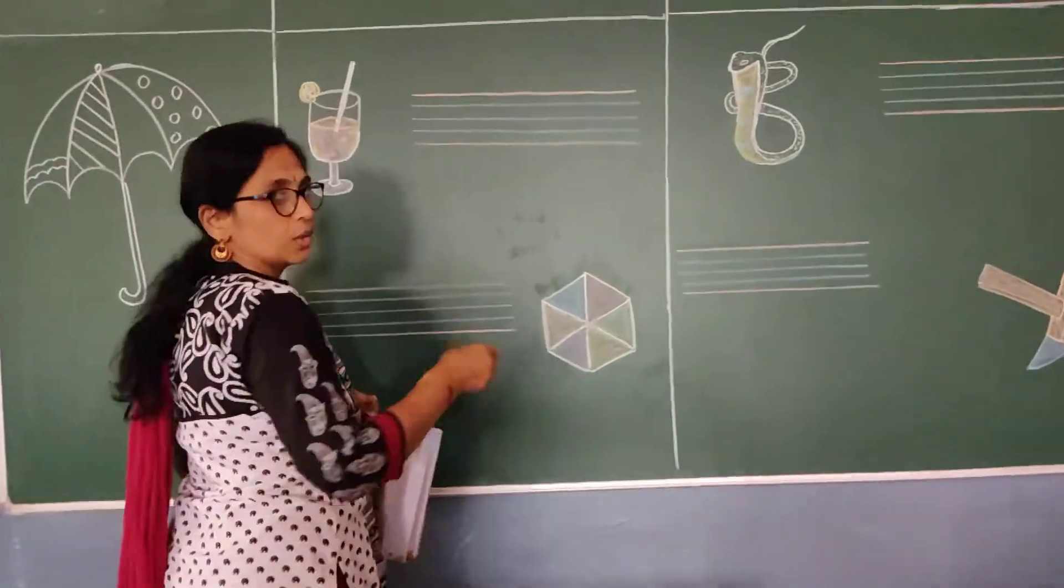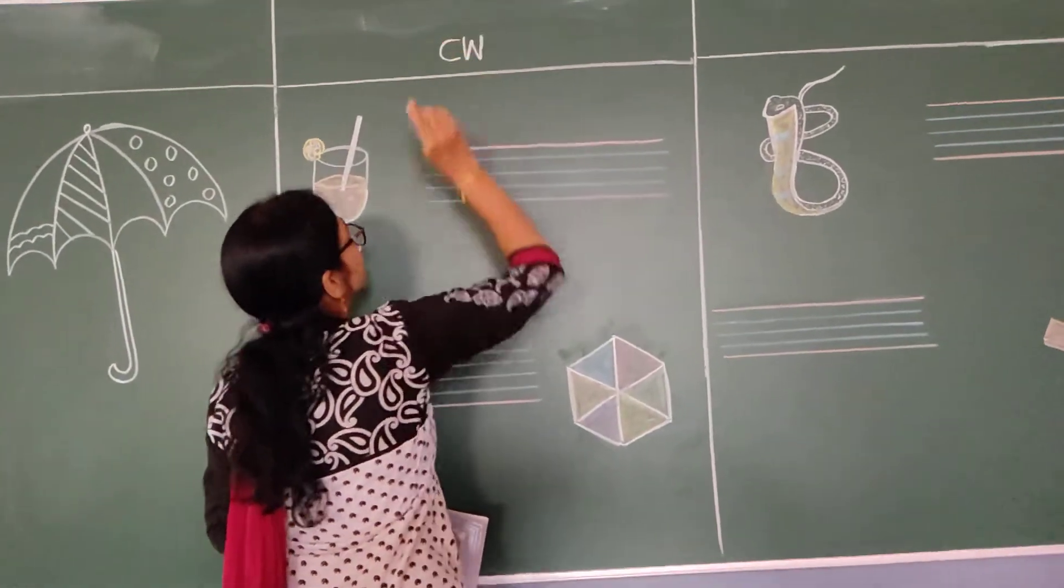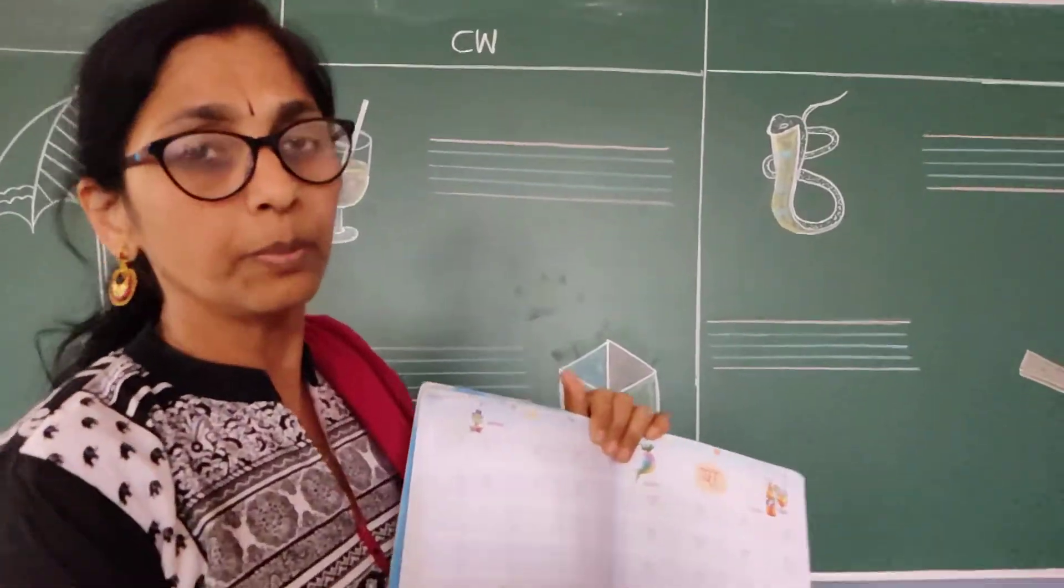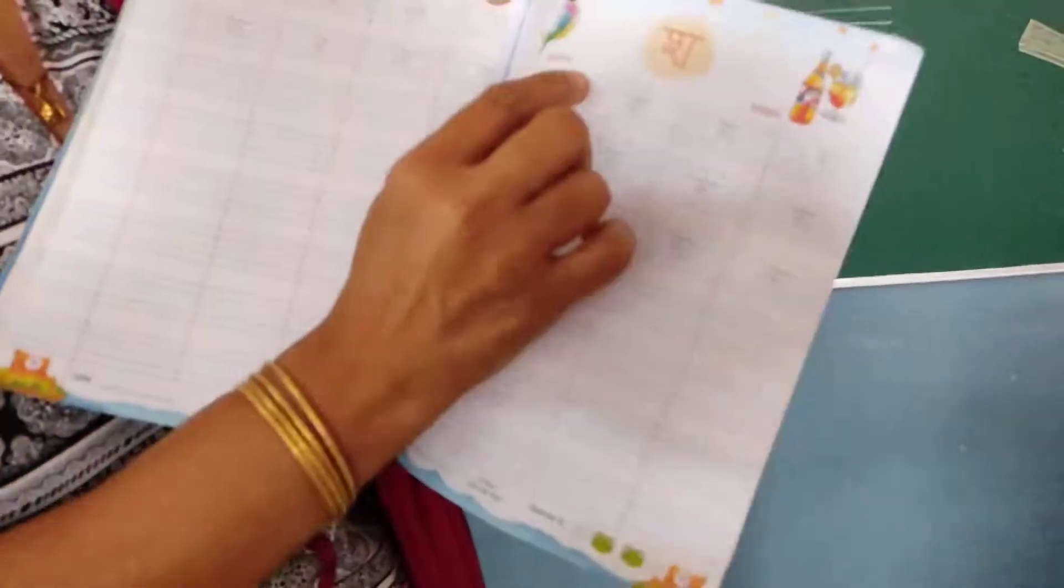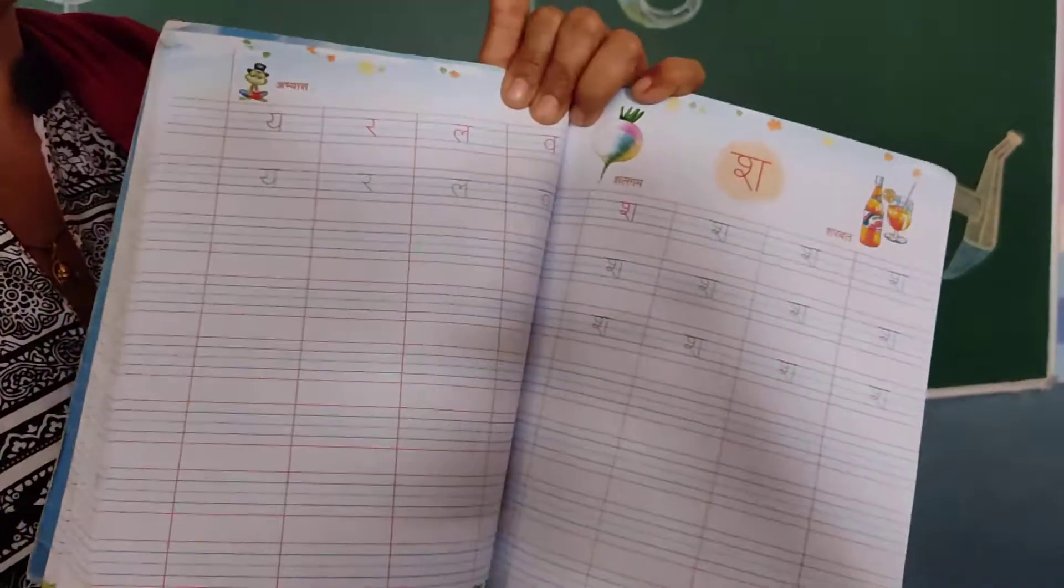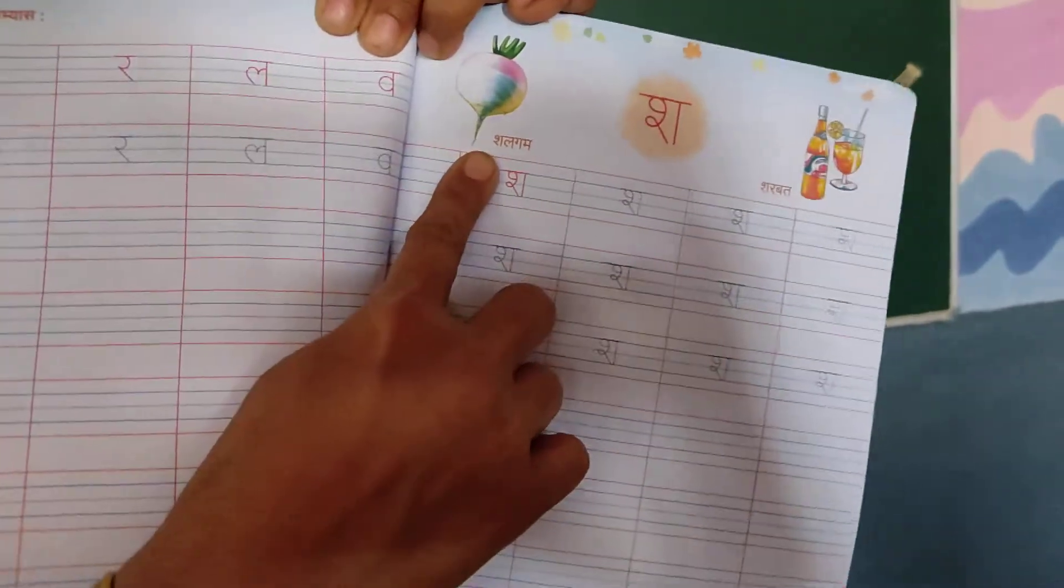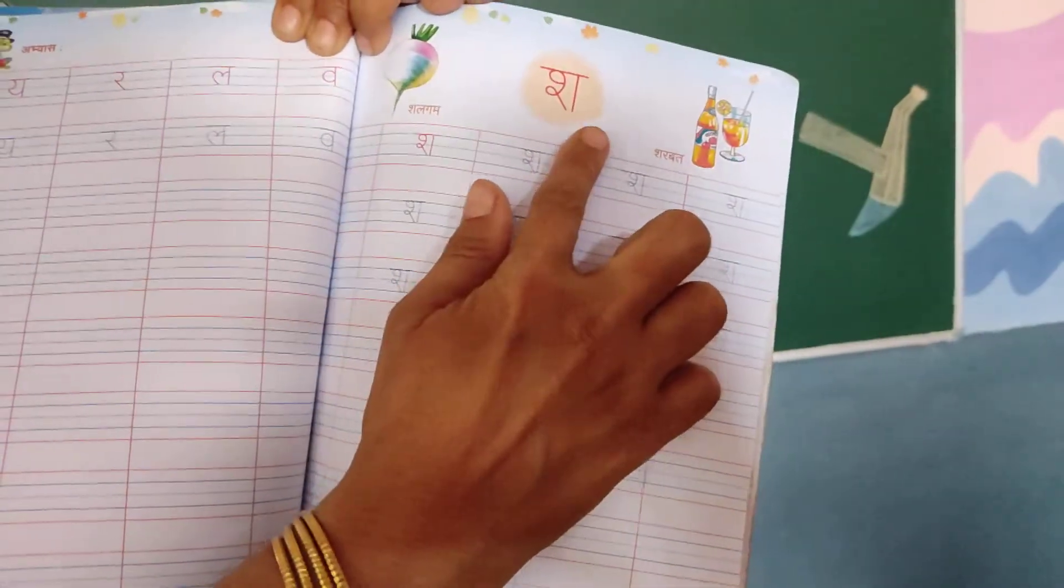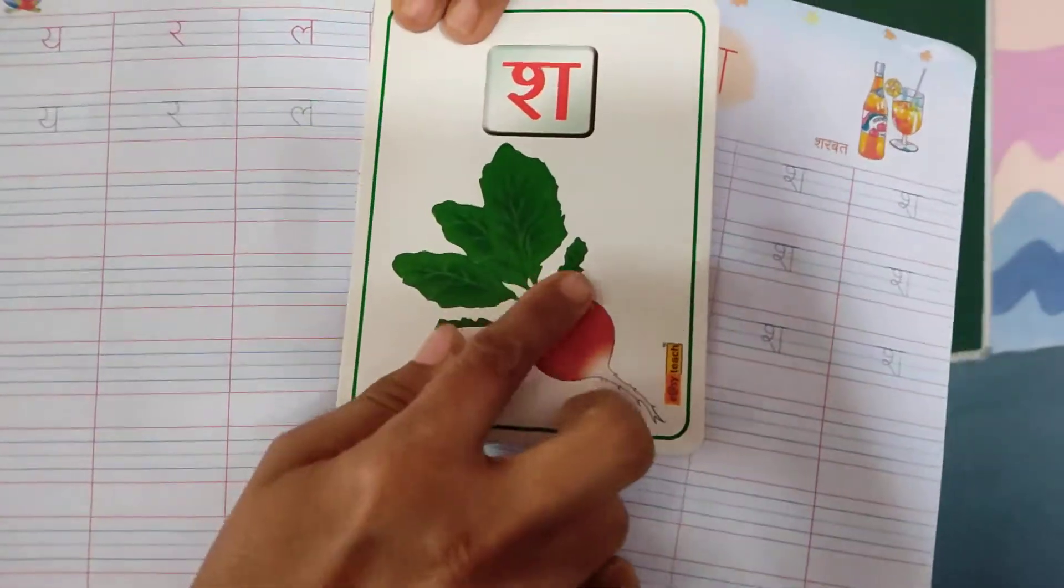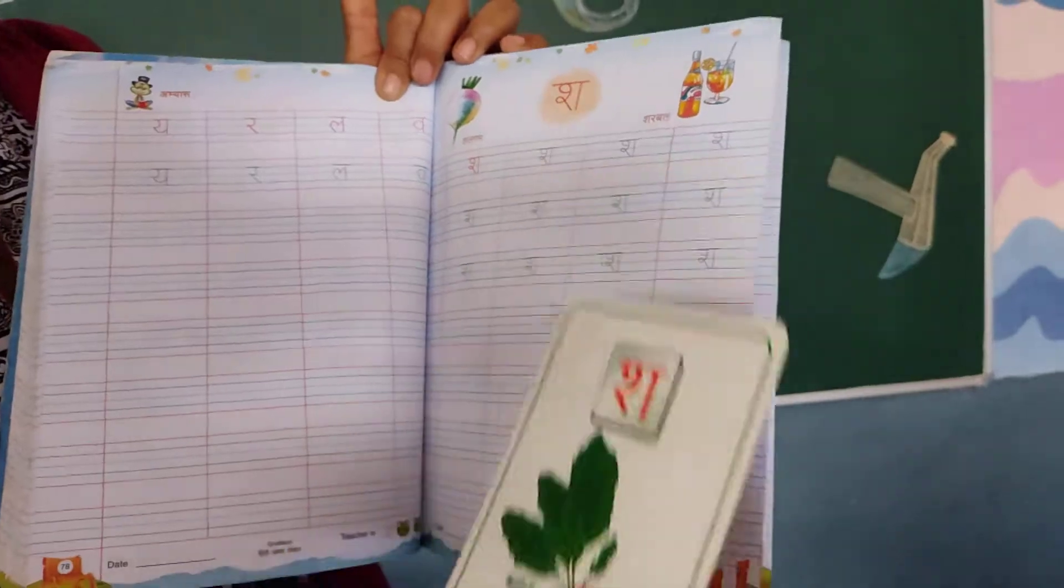First write down shah. You write down shah. Next sha. Before I show you writing, I want to make you read. See here, shah, this is shah. Shah se shalgam. See in this flash card also, shah se shalgam. Shalgam, this is one of the vegetable.